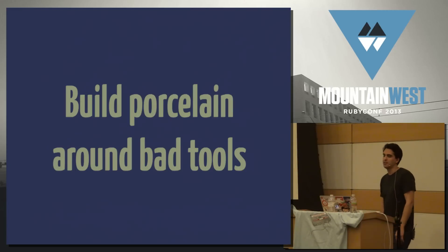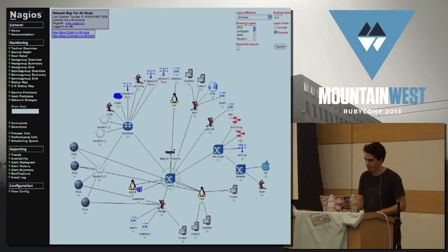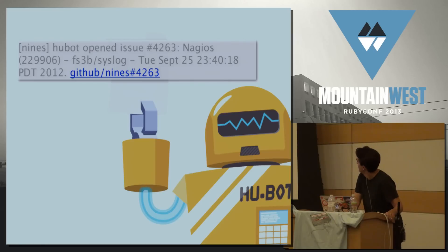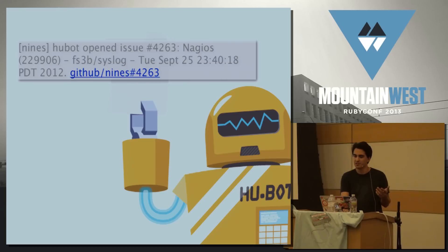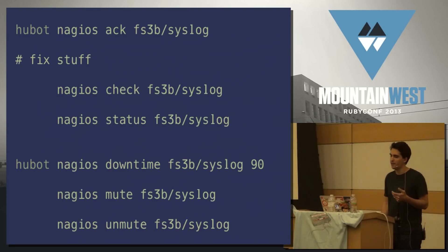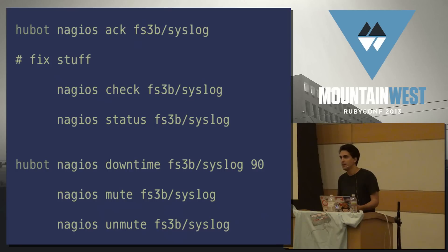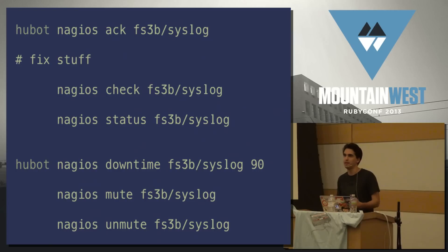Another benefit of ChatOps is it lets you hide ugly interfaces and decide exactly the interaction you want — you can build nice interactions around bad tools. My favorite example is Nagios. When a new alert comes in, Hubot lets us know about it, politely delivers it to us without any unnecessary eye bleeding, and we can interact with it directly in Campfire. Making this easy means that developers and ops engineers actually do this. I wonder how often developers actually mute services if they're going to perform maintenance on them.